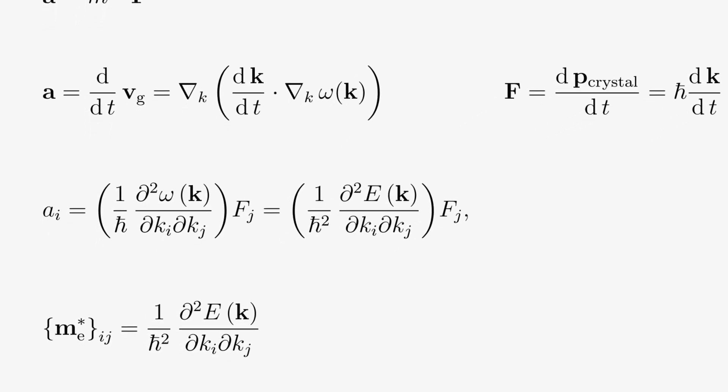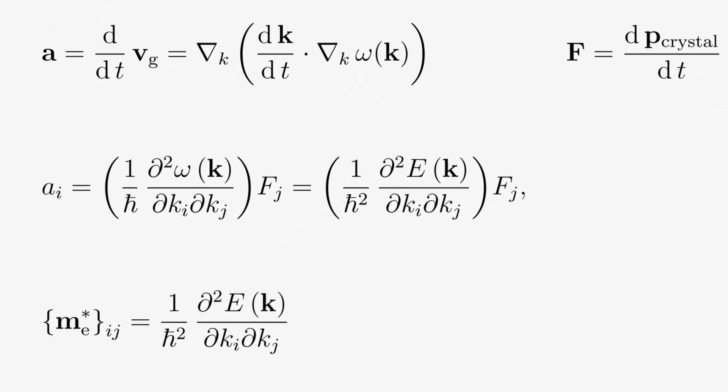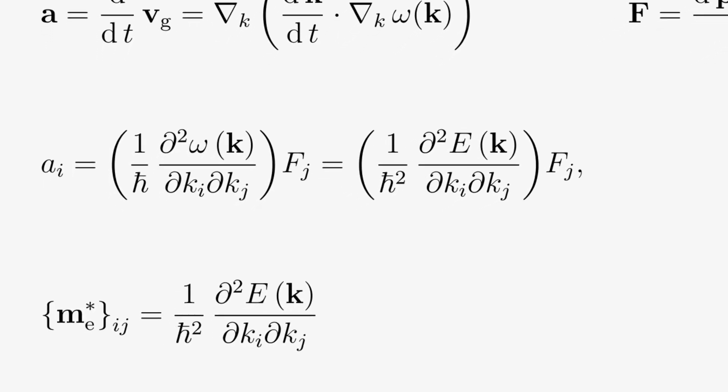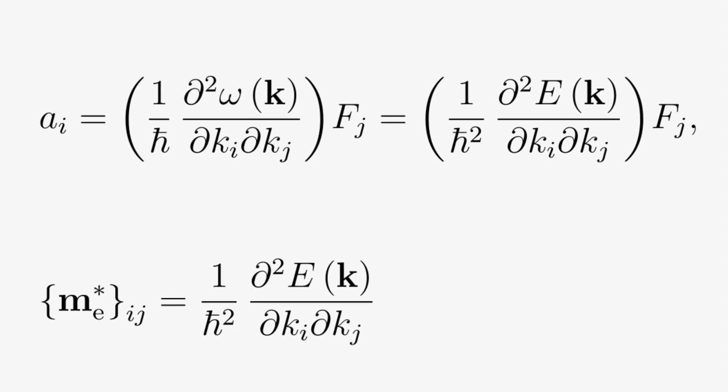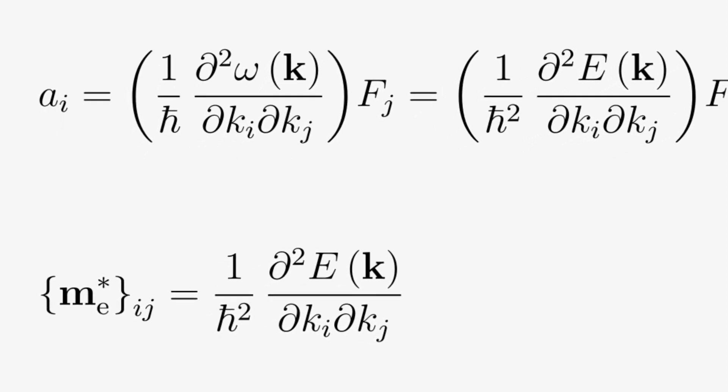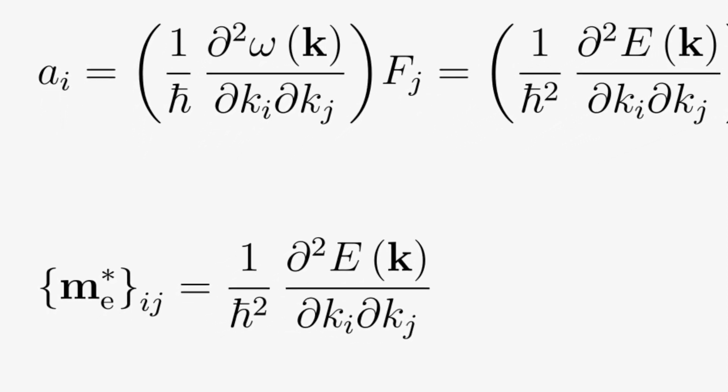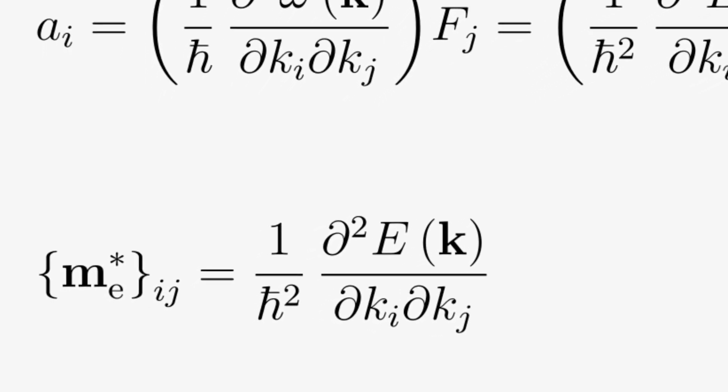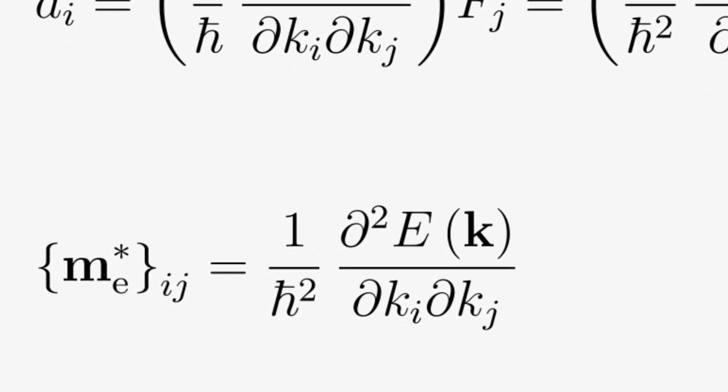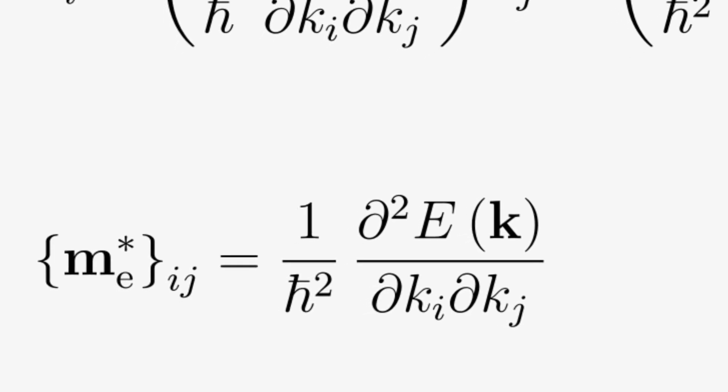One can understand this in the following way. If an electron is in a vacuum and a certain force acts on it the resulting acceleration directly relates to the electron mass. However in a crystalline material so in any periodic potential the motion of an electron can vastly differ from the motion of an electron in a vacuum.